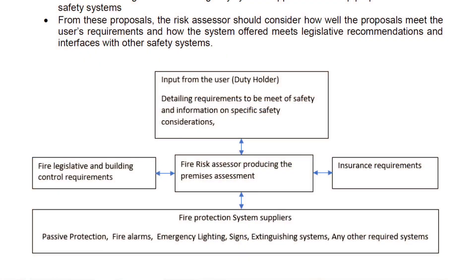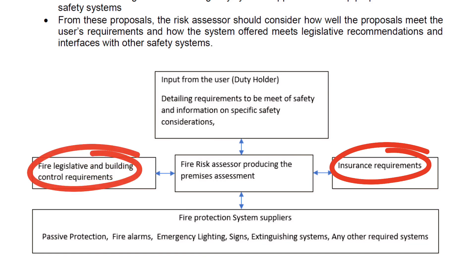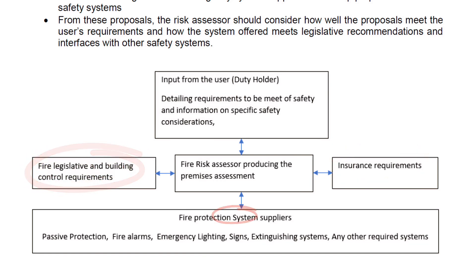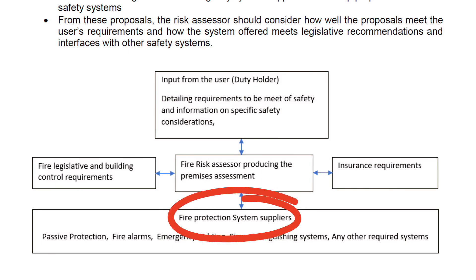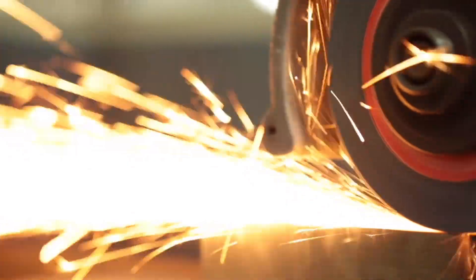In addition, the Industry Committee for Emergency Lighting — ICEL — part of the Lighting Industry Association, has published a technical statement highlighting the importance of collaboration when producing the fire risk assessment. The fire risk assessor should take on board information from the user or duty holder, from insurers, from building control and legislation, and very importantly from the fire protection system supplier — which includes emergency lighting and sign suppliers.